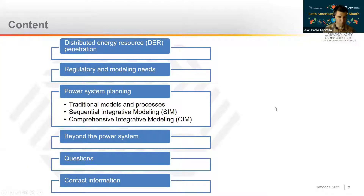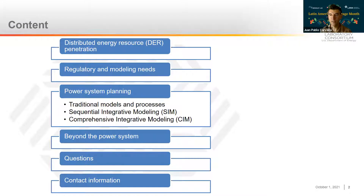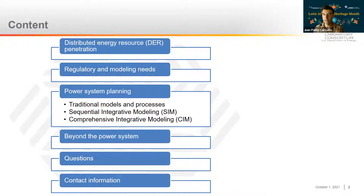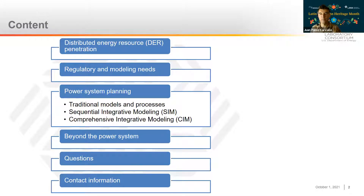In terms of content, I'm going to give a brief overview of distributed resource trends and how these trends trigger some regulatory, policy, and modeling needs. We're going to spend the bulk of this presentation talking about power system planning. I'll lay out the traditional modeling frameworks that exist, just so we're all on the same page. I'm going to introduce in more detail two types of comprehensive or integrative modeling approaches called sequential integrated modeling and comprehensive integrated modeling. The first one, SIM, will be the subject of a much more in-depth training on October 20th. I'm going to be giving some very brief results to show the characteristics, but we'll delve into that much more later.